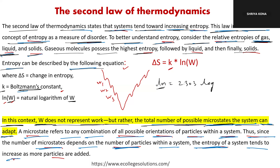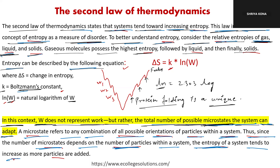A microstate is similar to the concept of protein folding — but protein folding is a specific process, it does not explore all possible configurations. So the total number of microstates includes all transition states from fully unfolded to the native, fully folded protein configuration. Adding up all microstates and transition states gives the total W in the Boltzmann equation.